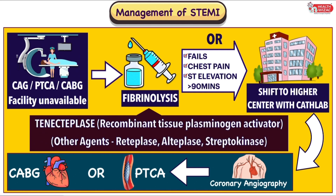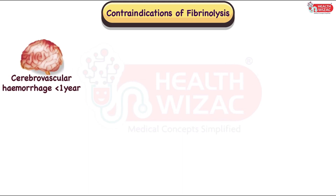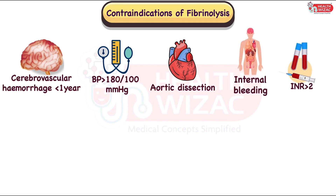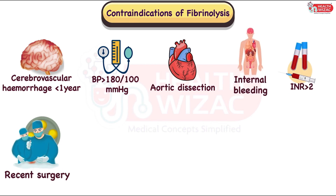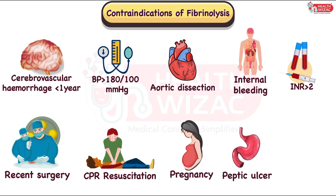Before taking the decision for fibrinolysis, there are definitive contraindications to note, which include: history of cerebrovascular accident within 1 year, BP more than 180/100 mmHg, aortic dissection, internal bleeding, INR more than 2, history of recent surgery, history of CPR resuscitation, pregnancy, active peptic ulcer, severe hypertension, or known allergy to the molecule.